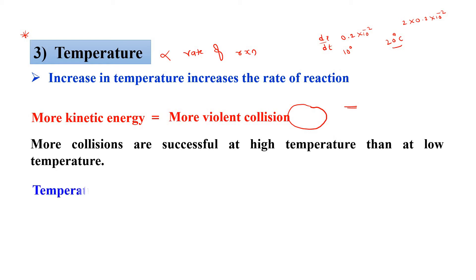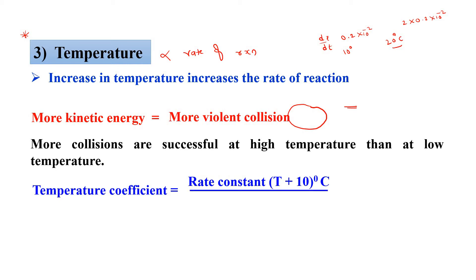Temperature coefficient means how much the rate of reaction is increasing. If you observe: rate constant at T temperature divided by rate constant at T plus 10 degree Celsius. As mentioned in previous videos, rate constant depends upon temperature and catalyst. When you change the temperature, rate constant also doubles. So at T degree Celsius rate constant is K, and for increasing 10 degree Celsius it becomes 2K. K cancels, so temperature coefficient is 2 — meaning for every 10 degree Celsius, rate constant increases 2 times.